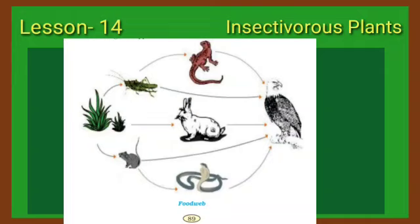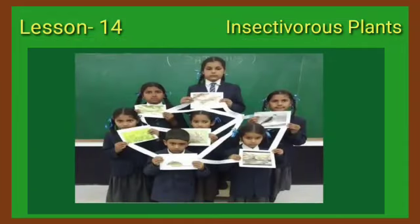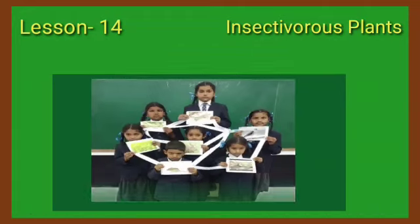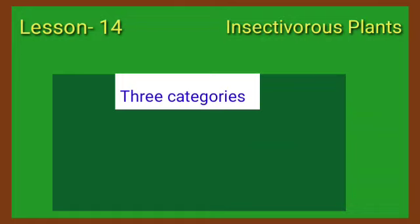Kids, look at this picture carefully. The children are holding cards with pictures of different animals in their hands, and those animal cards are attached with white stripes showing who eats whom. This is how a food chain is formed.